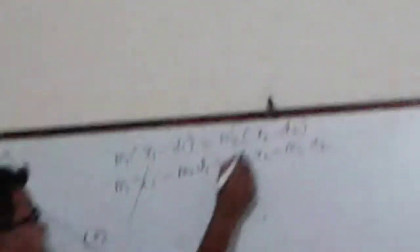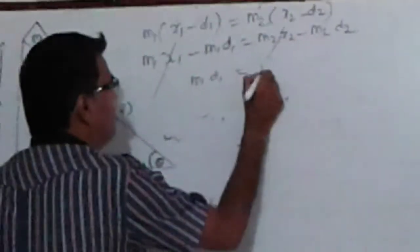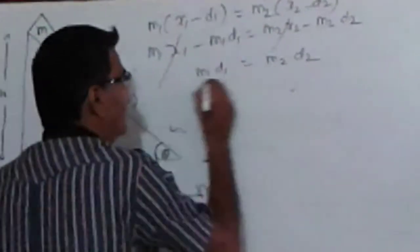Let us simplify this. Please note that M1*x1 is same as M2*x2. So it will cancel and I will get M1*D1 equal to M2*D2.